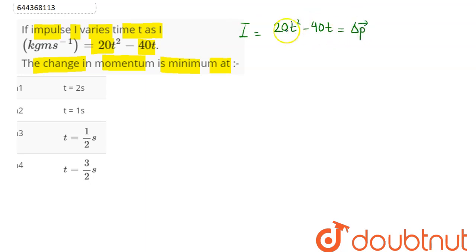So this change in momentum here is given as 20t² - 40t. Now we can say change in momentum is minimum, or impulse is minimum at... So applying the concept of maximum minima, we can say